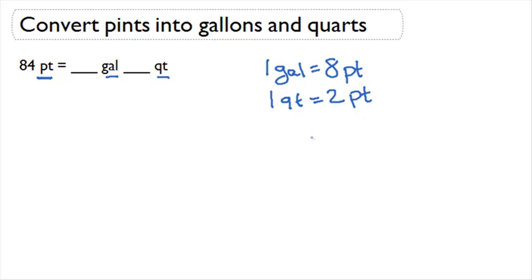Now let's start off by seeing how many whole gallons we can fit into our 84 pints. If one gallon is equal to eight pints, we're going to look for a multiple of eight that's as close to our number as possible.